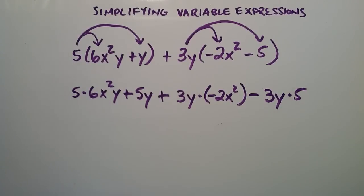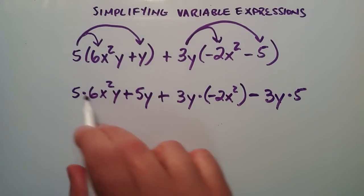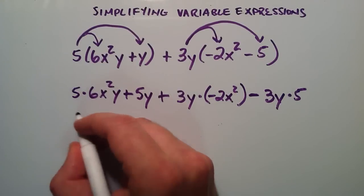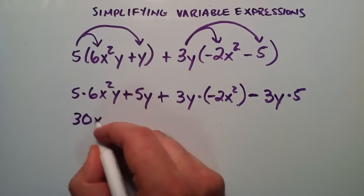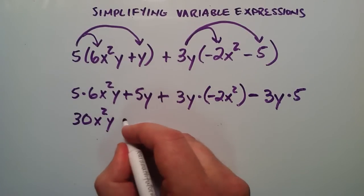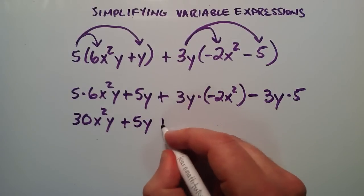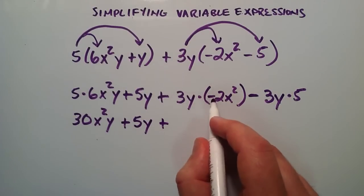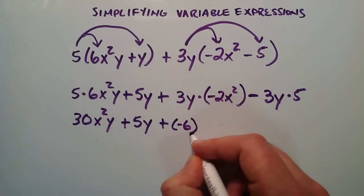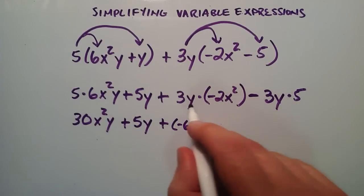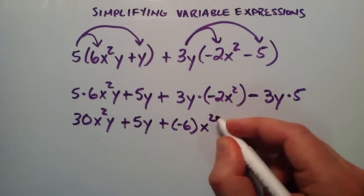So now what we're going to do is we're going to look at each term, and we're going to multiply the numbers together in each of our terms. So in this first term, we have 5 times 6. 5 times 6 is 30, and then we just rewrite the x squared y. And we only have the number 5 here, so we're just going to rewrite this as 5y. Then plus — now we have a 3 and a negative 2. 3 times negative 2 is negative 6, and then we're left with y and x squared. We can write these in any order, so we're going to write the x squared first, and then the y.